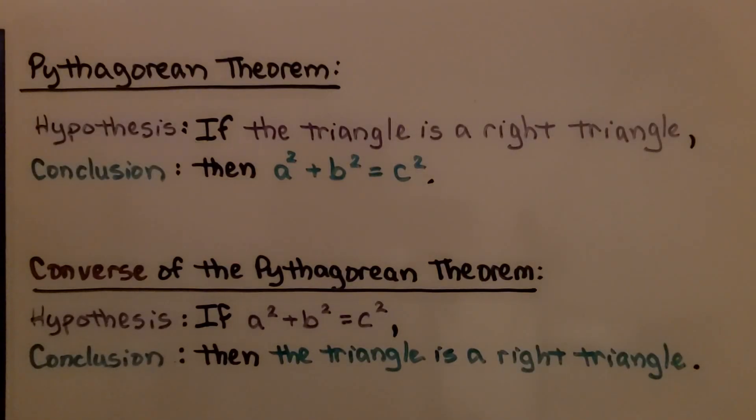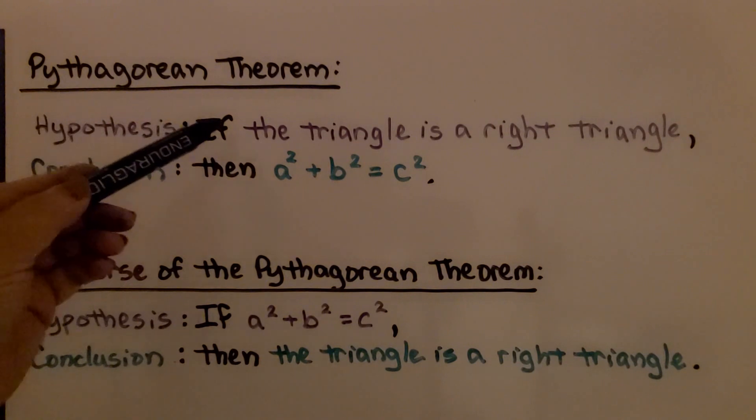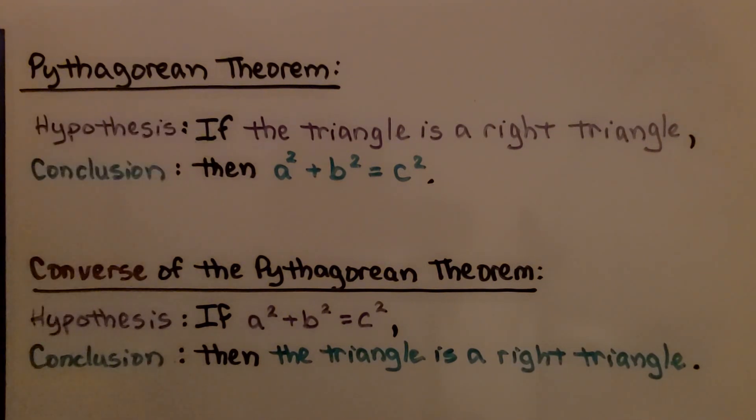So let's use some color to see how the hypothesis and conclusion were swapped. We have our Pythagorean Theorem. We have our hypothesis if the triangle is a right triangle. But in the converse, the hypothesis is a squared plus b squared equals c squared.